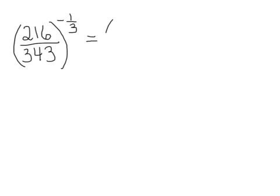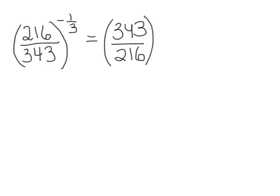So if we do this and write 343 over 216 instead of 216 over 343, then that would be with an exponent of positive one-third. We've done the reciprocal, so the negative sign goes away from the exponent.